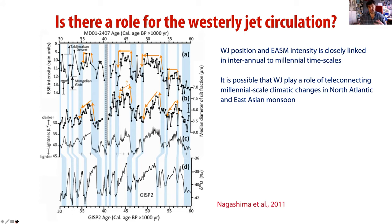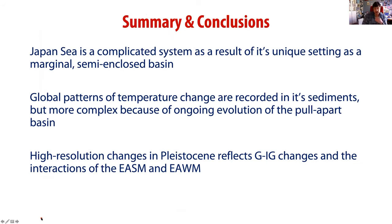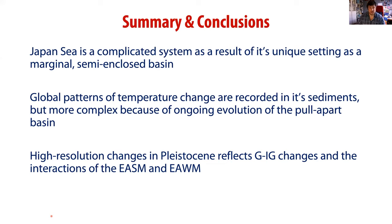To summarize: the Japan Sea is quite a complicated system as a result of its unique setting as a marginal semi-enclosed basin. Global patterns of temperature change are recorded in the sediments, but more complex because of the ongoing evolution of the pull-apart basin. High-resolution changes in the Pleistocene reflect glacial-interglacial dynamics and the interaction of the East Asian Summer Monsoon and East Asian Winter Monsoon. Thank you for your attention, and I'm happy to answer any questions.